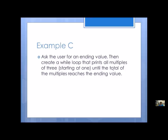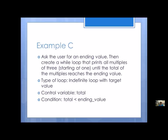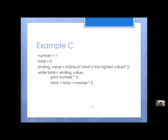Do I know how many times it's going to take for the total to get to the ending value? No — so it is an indefinite loop with a target value. The control variable is not going to be count; it's going to be total. My condition is total less than the ending value. Could it be less than or equal to? Let's check the words — we've got 'until,' so I'm going to do the opposite. Until the total reaches the ending value means total greater than or equal to the ending value, and doing the opposite gives me less than. And the loop would look something like this.